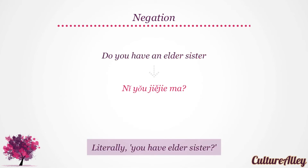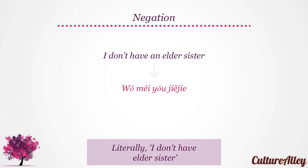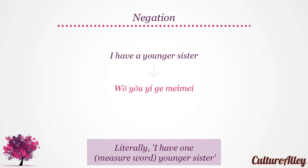Do you have an elder sister? translates to 你有姐姐吗? — literally meaning you have elder sister? Similarly, I don't have an elder sister translates as 我没有姐姐, literally meaning I don't have elder sister. I have a younger sister becomes 我有一个妹妹, literally meaning I have one measure word younger sister.